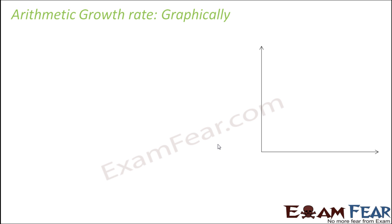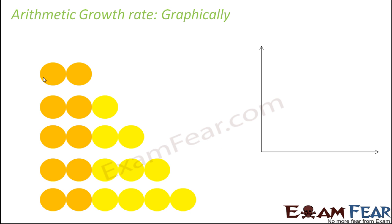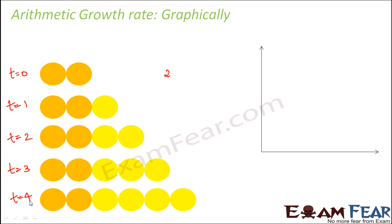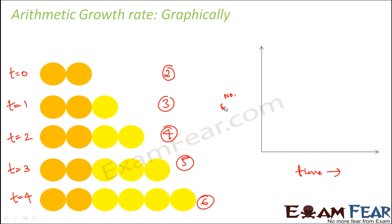Let us look at arithmetic growth rate graphically. At initial time t = 0, suppose you had two cells. As time increases — taking arbitrary time units just to show the graph shape — we plot time on the x-axis and number of cells (representing growth, parameter L) on the y-axis.